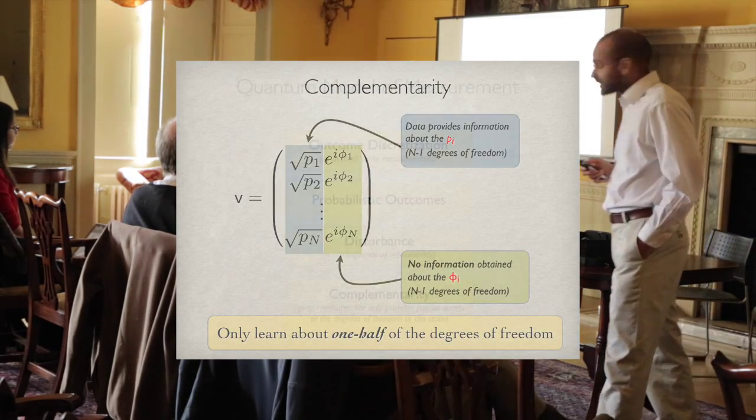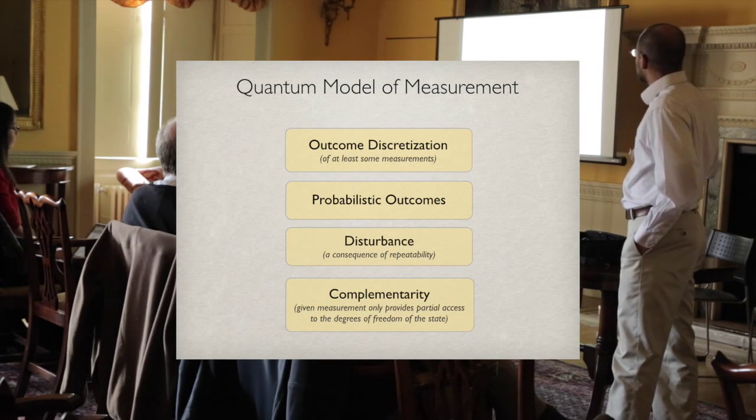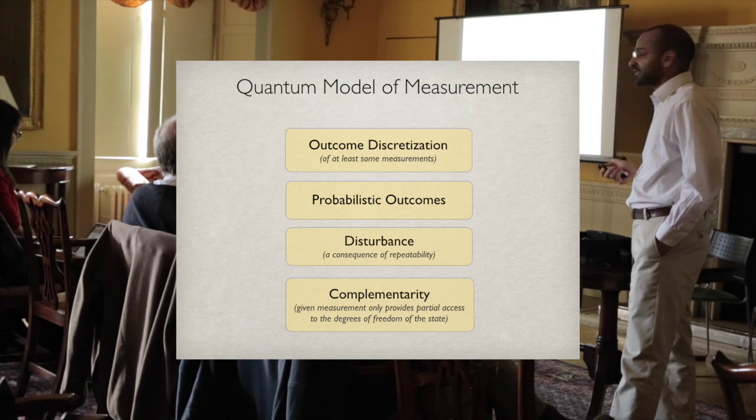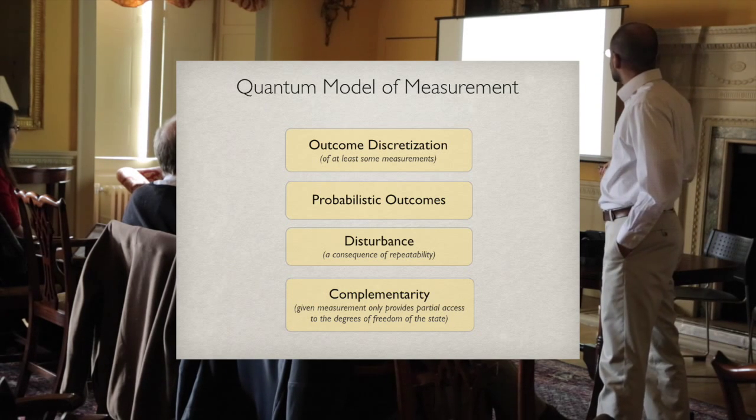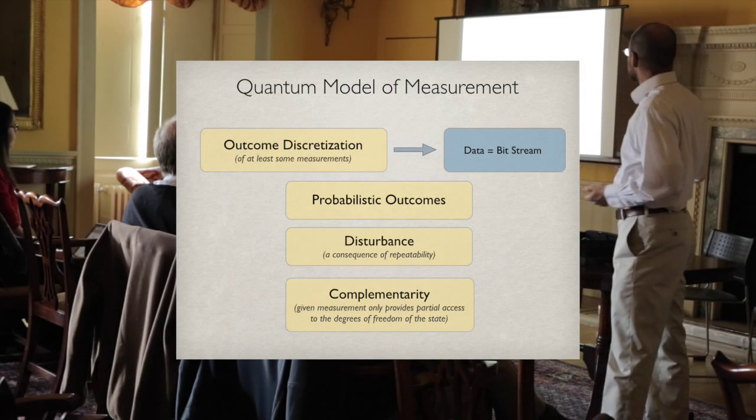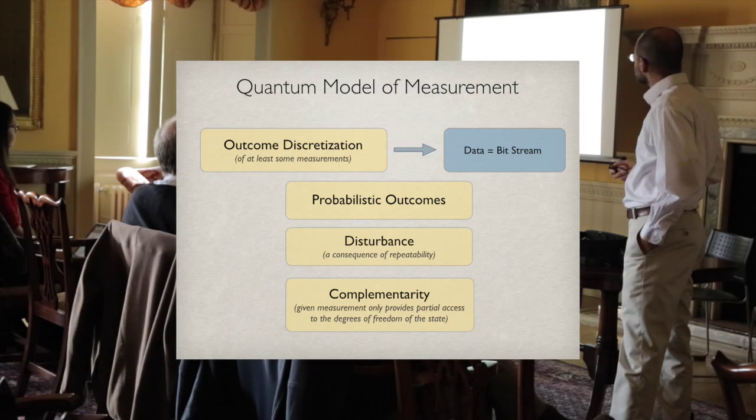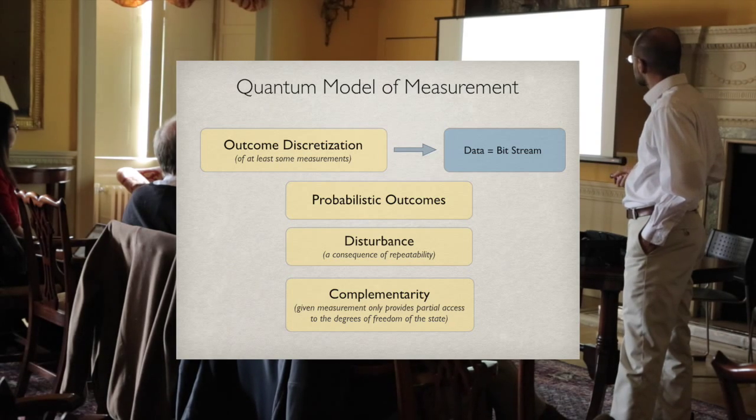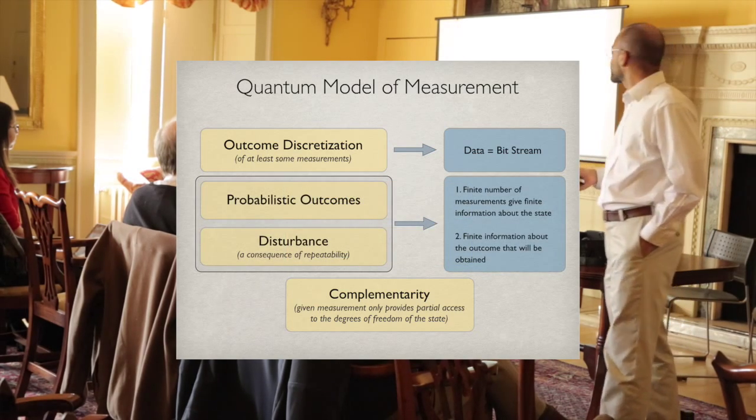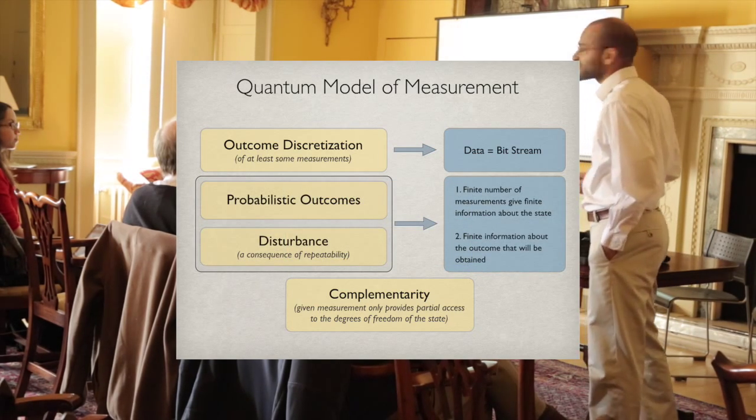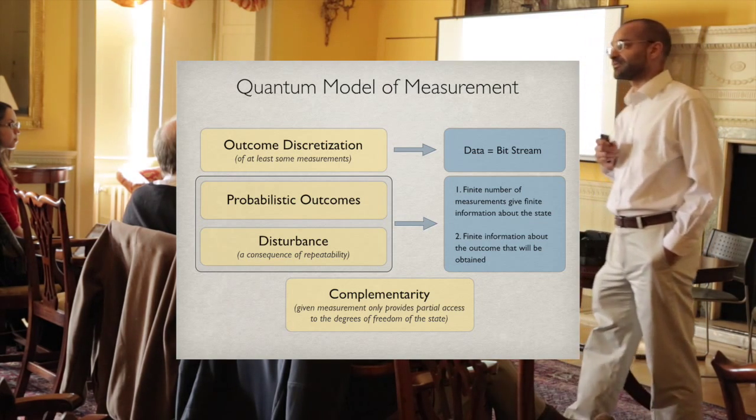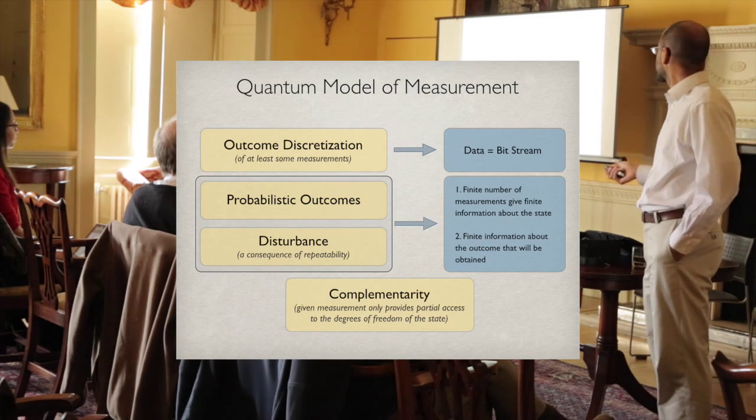To summarize, in a quantum model of measurements, there are measurements whose outcomes are discrete - a finite number of possible outcomes. We have at the basic level the idea that data, at least sometimes, is a bit stream. When outcomes are probabilistic, a finite number of measurements only give finite information about the state, just like trying to predict the bias of a coin by tossing it a dozen times.